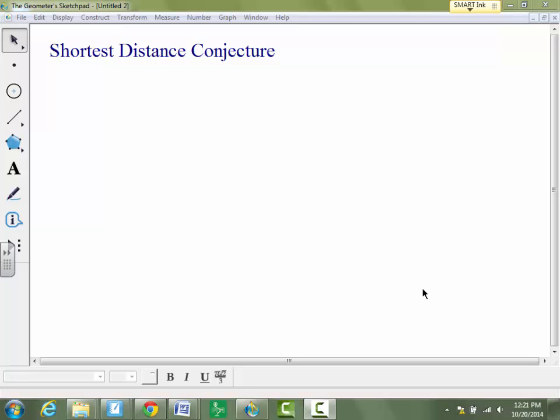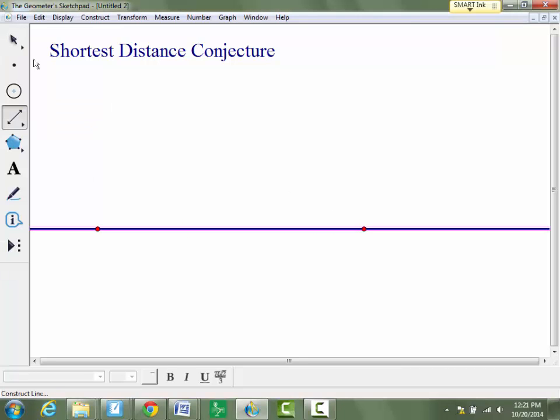Okay, here's how you complete the sketch for the shortest distance conjecture. We are first going to start with a line and a point that is not on the line.